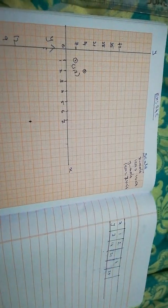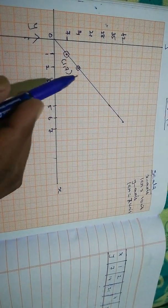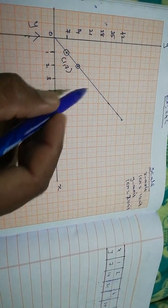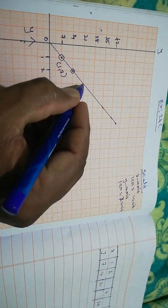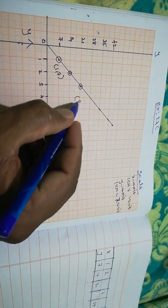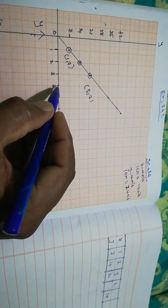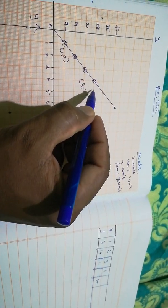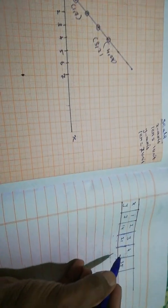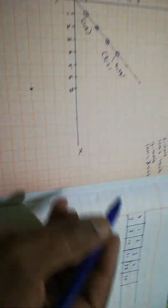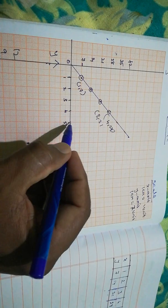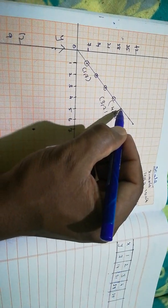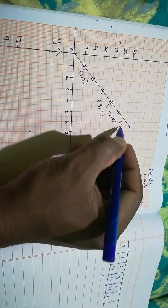From the graph, when x = 3, y = 21. For x = 4, y = 28. For x = 5, y = 35. So the missing values are: 3 → 21, 4 → 28, and 5 → 35.